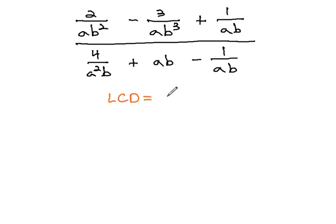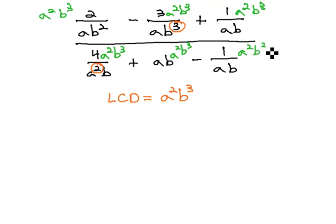The factors we see in the denominator are a and b, and we will attach the highest exponent. The highest exponent we see on an a is squared. The highest exponent we see on a b is cubed, and so a squared b cubed is what we will multiply each term in both the numerator and denominator by. This includes the ab, which is not a fraction. We're multiplying each term, whether it's a fraction or not.